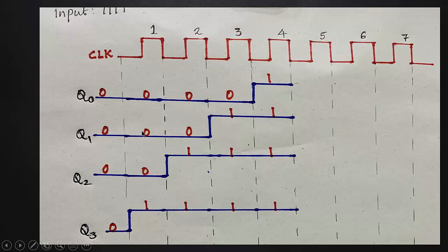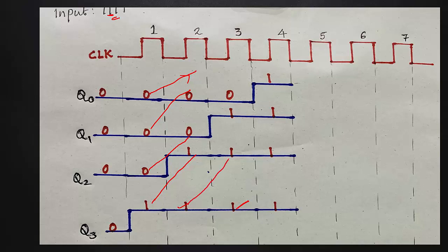If you apply the clock, now the output comes out of Q3. We will extend. If you have 0 here, it will be externally out. With each new clock pulse, the output shifts out. This is the procedure.